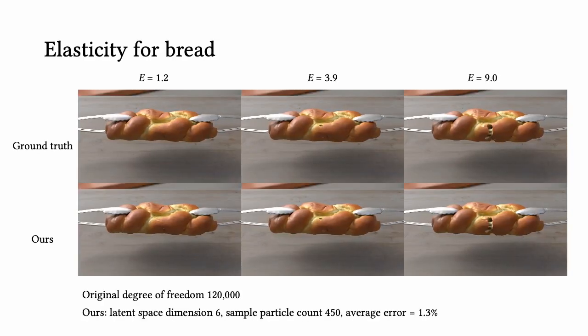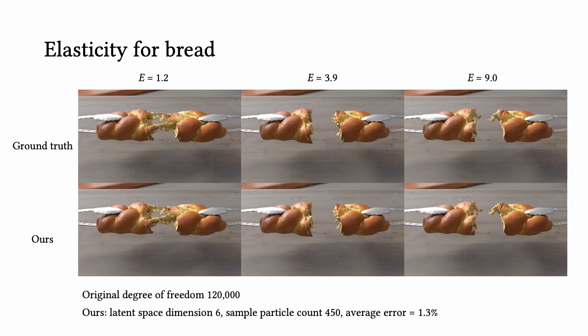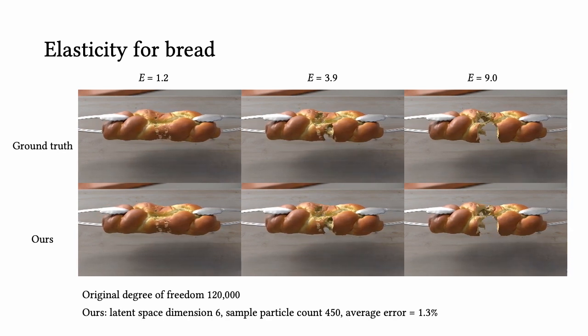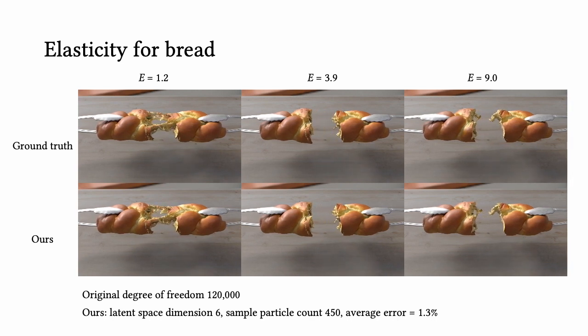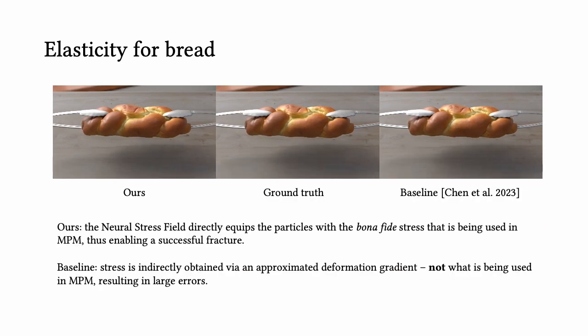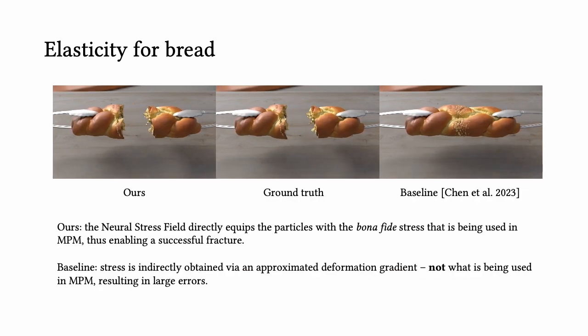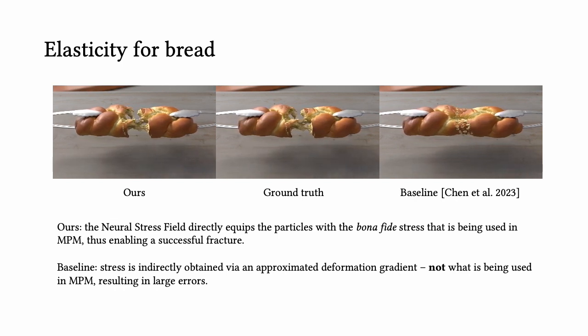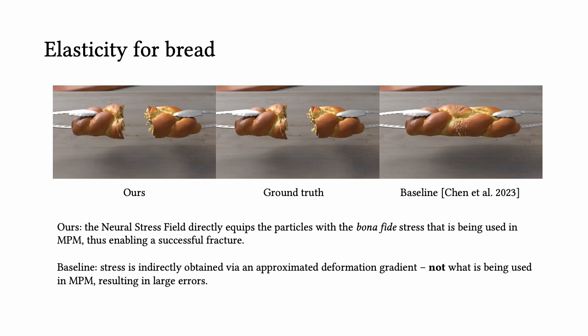We simulate the tearing of bread under different Young's modulus. Our method can capture the fracture pattern under varying and unseen Young's modulus. With latent space dimension r equals 6 and a sample size of 450 particles, we achieve an overall average error of 1.3%. Compared with the baseline method, our neural stress field directly equips particles with the bona fide stress used in the MPM setting, enabling successful fracture. In the baseline method, stress is obtained via an approximated deformation gradient, which is not what is used in MPM and thus results in large errors.